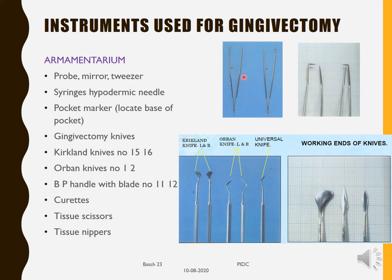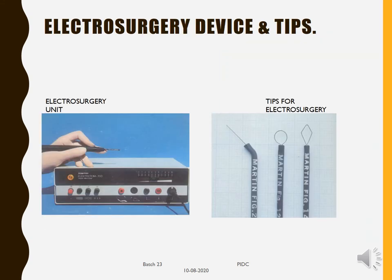Instruments for gingivectomy include: the basic set — probe, mirror, tweezer, syringe, hypodermic needle with local anesthesia. A pocket marker is needed to locate the base of the pocket. Gingivectomy knives include the Kirkland knife (for facial and lingual surfaces), the Orban knife (for interdental aspects), and the universal knife. BB blades numbers 11, 12, and 15 can also be used, along with curettes, tissue scissors, and tissue nippers.